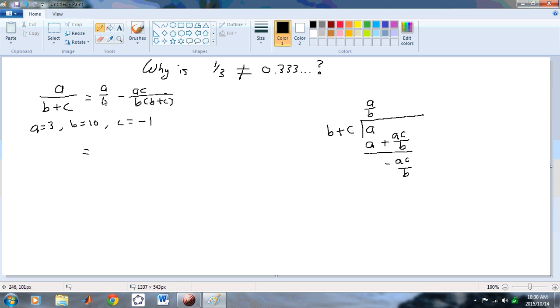And we could let A equal to 3, B equal to 10, and C equal to minus 1. So that we end up with 3 over 10 minus 3 times minus 1 over 10, which is B times B plus C is 9. And so what does that give us? That gives us 3 tenths plus 1 over 30.